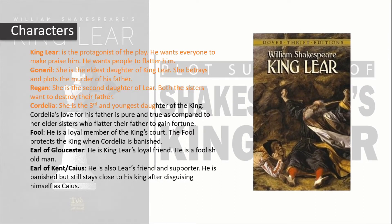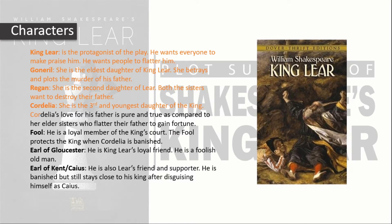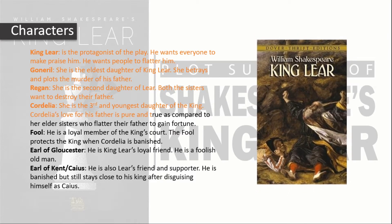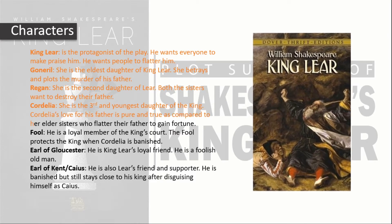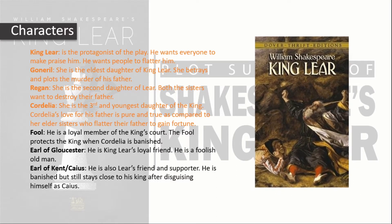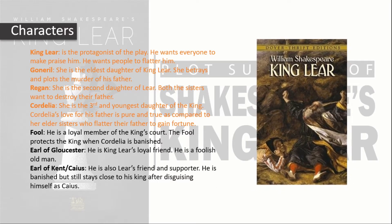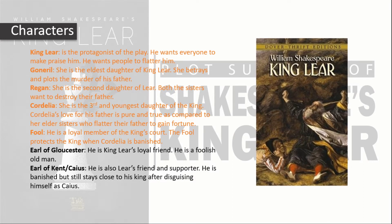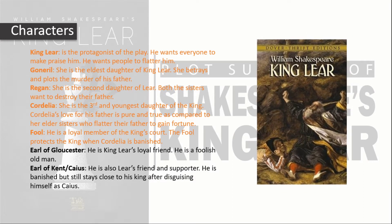Cordelia is the third and youngest daughter of the king. Cordelia's love for her father is pure and true, as compared to her elder sisters who flatter their father to gain fortune. The Fool is a loyal member of the king's court who protects the king when Cordelia is banished.